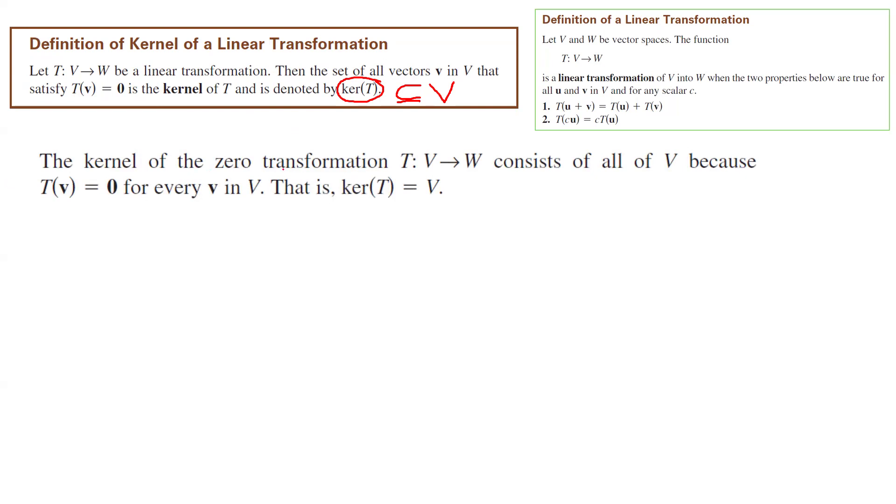The kernel of the zero transformation consists of all vectors V. Why is that? Because the zero transformation takes everything and maps them to zero vector. That's the definition of zero transformation. The zero transformation by definition is T(v), the output is always zero.